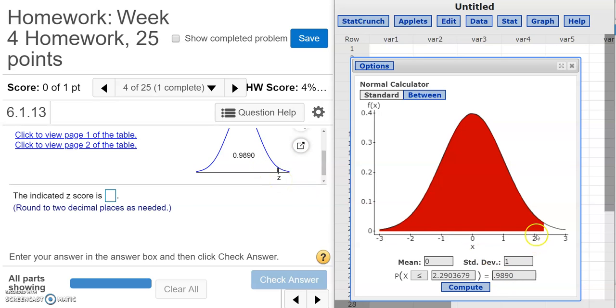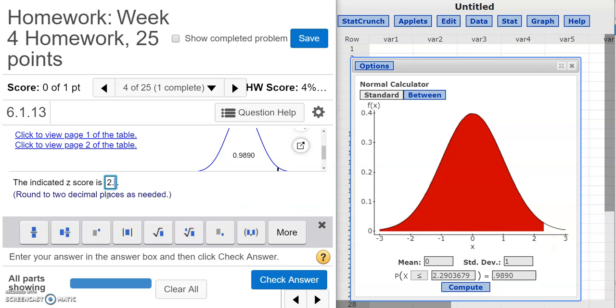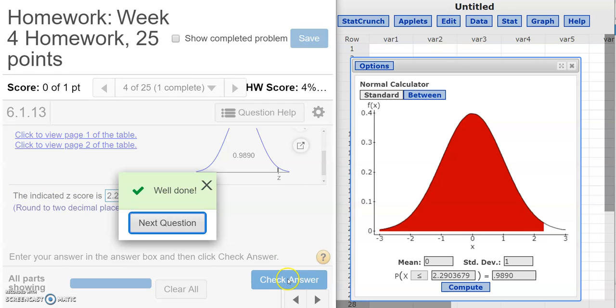So what is this z value? Well, the z value is right here. It's that value that cuts the graph so that this much area, 0.9890, is to the left, and the remaining area is to the right. So we can see on the graph that it kind of looks like this cut point, this z value, is somewhere between 2 and 3. And to get the exact value, I look right here. So 2.290, etc., is the value that corresponds to this z score. So I can put that value right here, 2.29. And this said to round to two decimal places, so I stop. And that's correct.